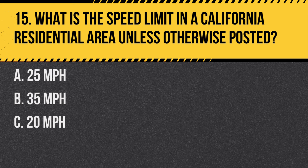Question 15: What is the speed limit in a California residential area unless otherwise posted? A. 25 miles per hour. B. 35 miles per hour. C. 20 miles per hour. Answer: A. 25 miles per hour. In California, the default speed limit in residential areas is 25 miles per hour unless otherwise posted.